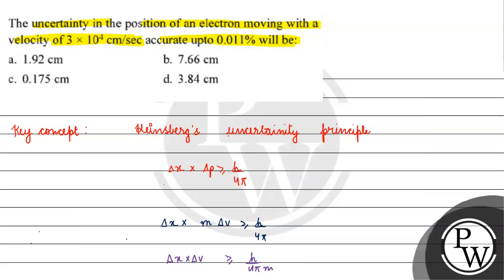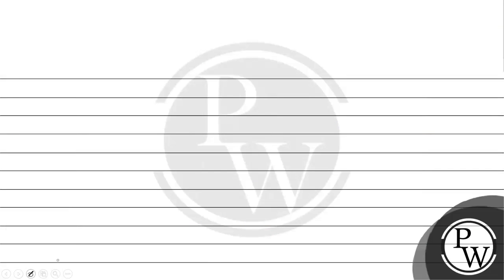We are given the uncertainty in position of an electron moving with a given velocity, accurate up to 0.011 percent. We need to find Δx, so our working formula becomes: Δx = h / (4π · m · Δv).